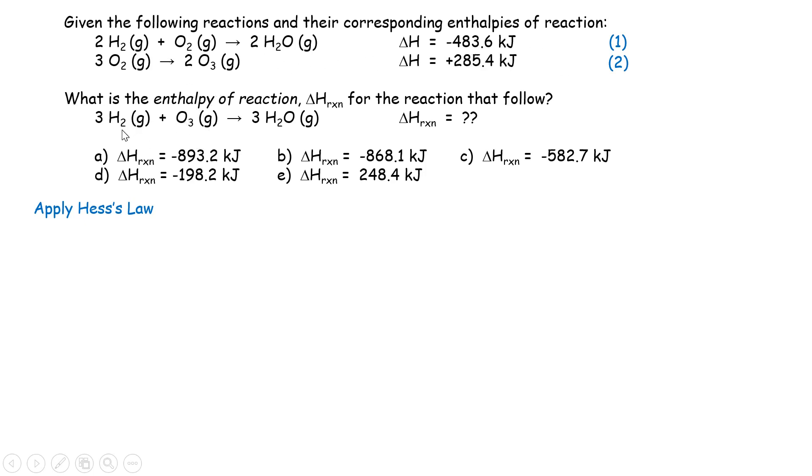How do we do that? First, take a look at the reactants for the target reaction. We have hydrogen on the left-hand side. Now we try to find out hydrogen in the two known equations. In equation 1, hydrogen H2 is on the left-hand side. So therefore, for equation 1, we do not need to change the direction of the reaction.